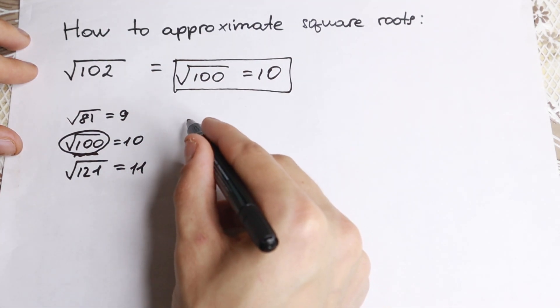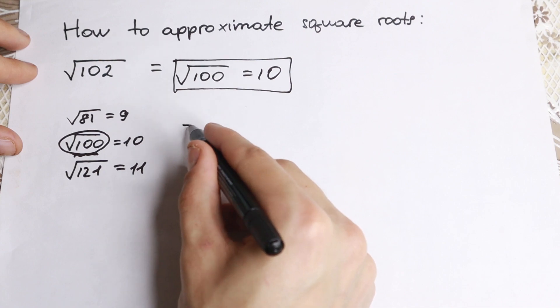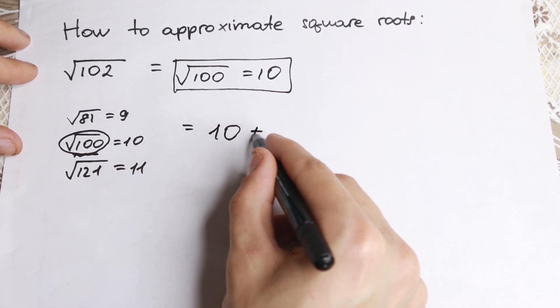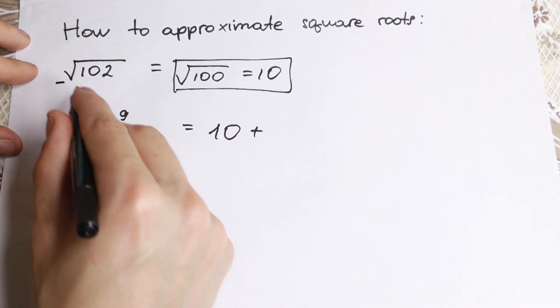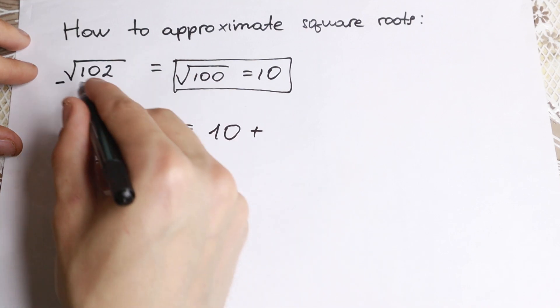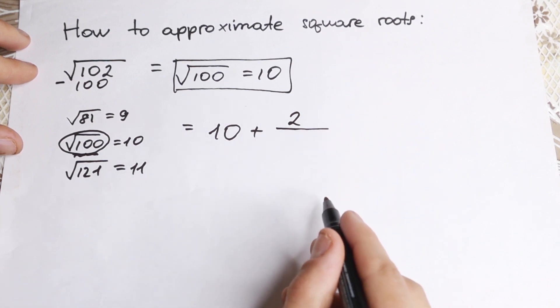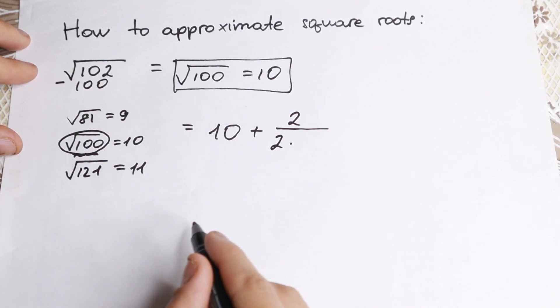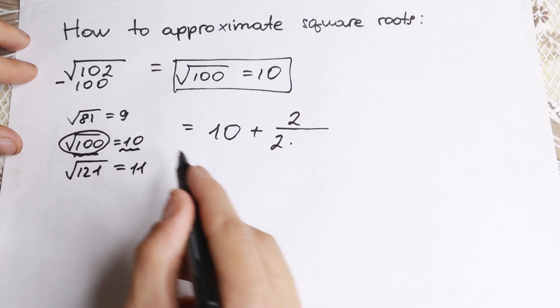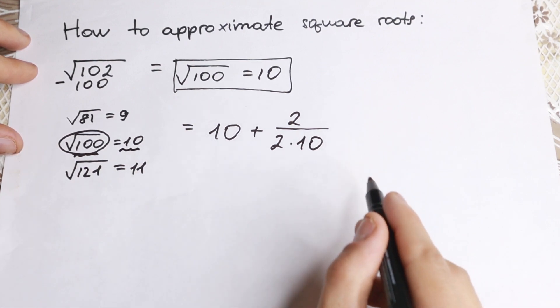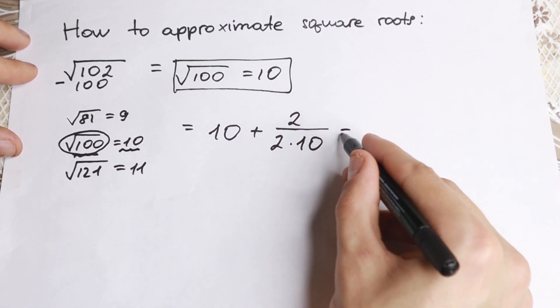Equal to 10. And right now we need to add to this 10. So right here we have 10 that we know, plus... And we need to subtract from this 102. We need to subtract this 100. We will have 2. We write this 2 right here. And we need to divide this by 2 times the square root that we find. So we find this 10. So we need to multiply it by this 10. And let's exactly calculate this.